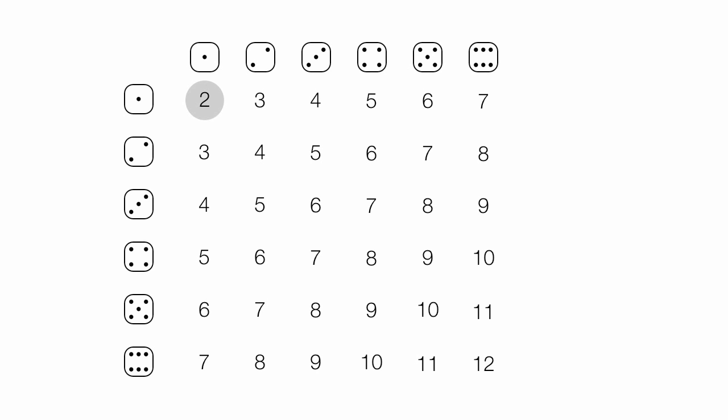If I counted up all the entries or all the events in this table, I would have 36 events, or 36 possible outcomes.